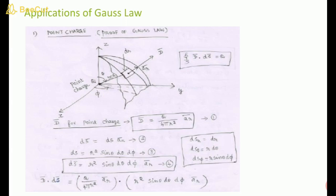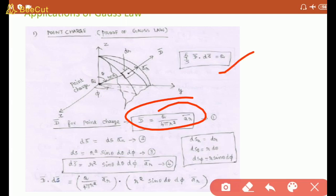Now applications of Gauss law — the first is point charges and proof of Gauss law. As you can see, we have drawn an irregular surface in Cartesian coordinates with a very small surface element dS. The flux density is normal to the surface and makes an angle theta with respect to the z-axis. D for point charges has the value from the generalized formula, and dS in polar/spherical coordinates: dr, r·dθ, r sinθ·dφ.